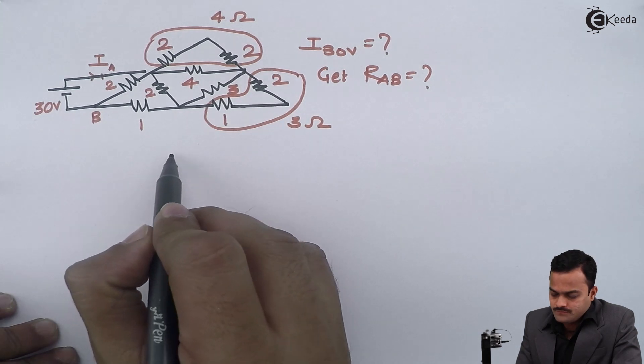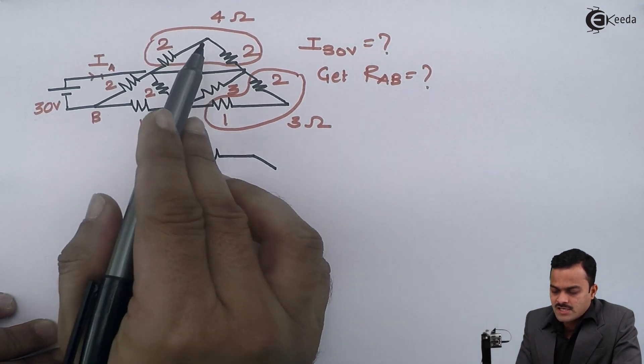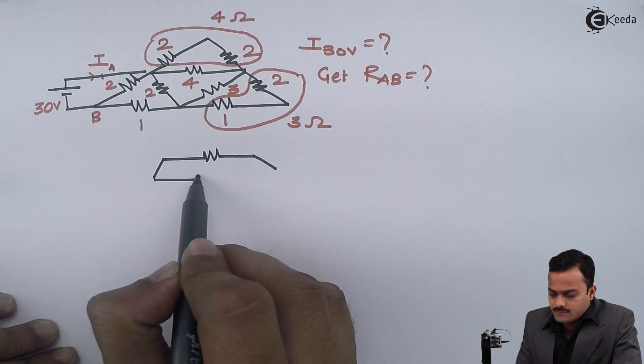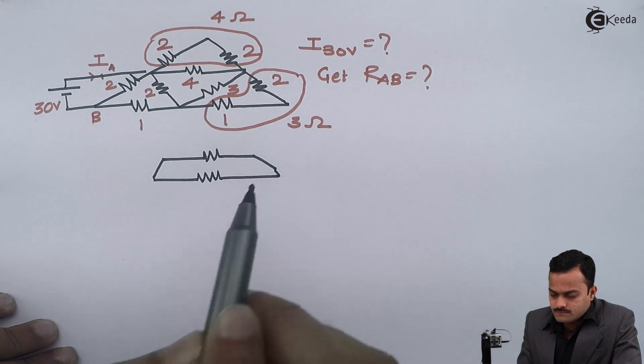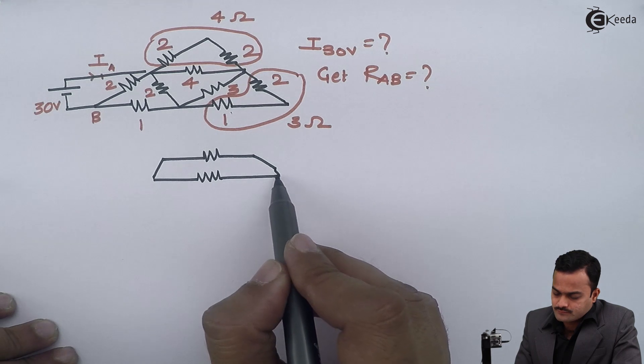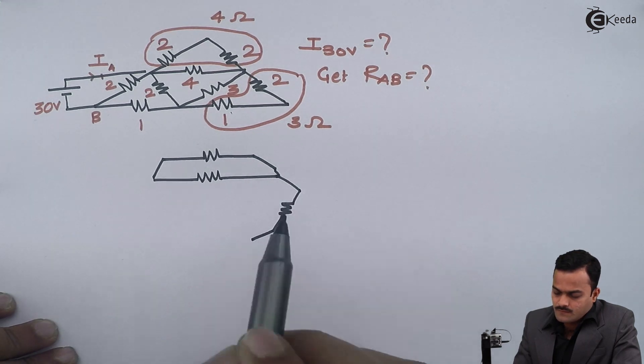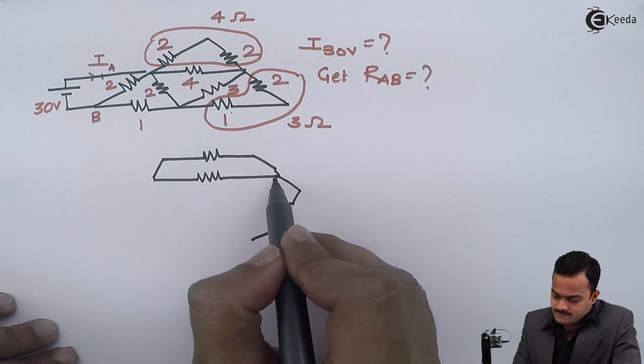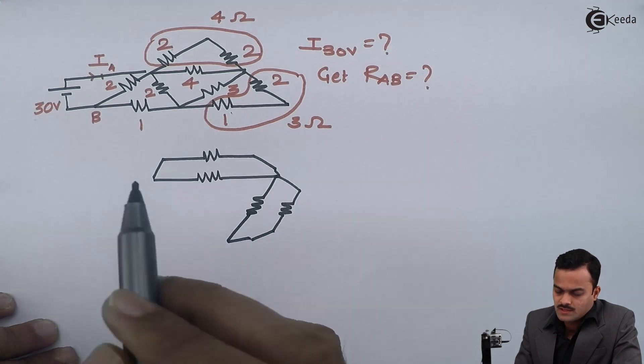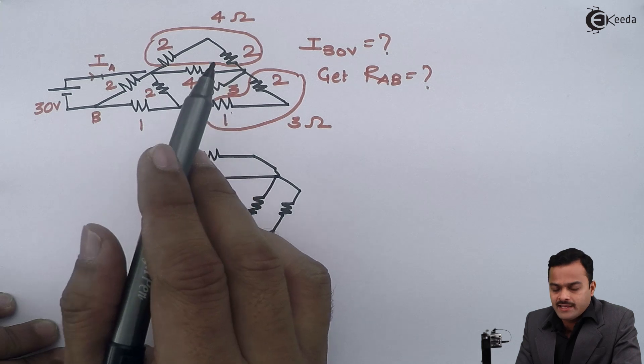So 2 and 2 will become 4 ohm. This 4 ohm will be coming between these two points. Then 1 and 2 will become 3 ohm. This 3 ohm untouched will remain as it is. The rest of the circuit will remain as it is since we have not touched any of those resistors.